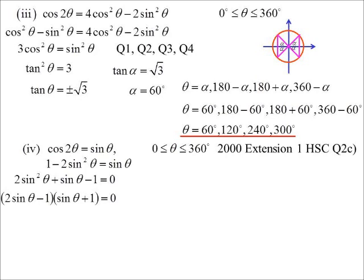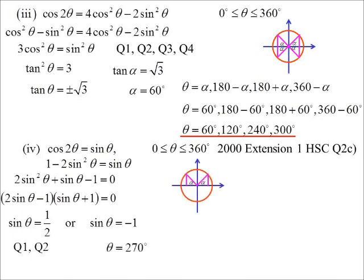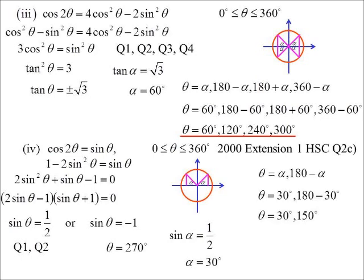So, two possibilities. Sine theta is a half. Sine theta equals negative 1. And we solve each of those individually. So, the first one's positive. We're in the first two quadrants. Half is an exact value. Sine theta equals negative 1. There's only one answer for that one. 270 degrees. So, sine being a half. We end up with three answers all up. 30, 150, 270.